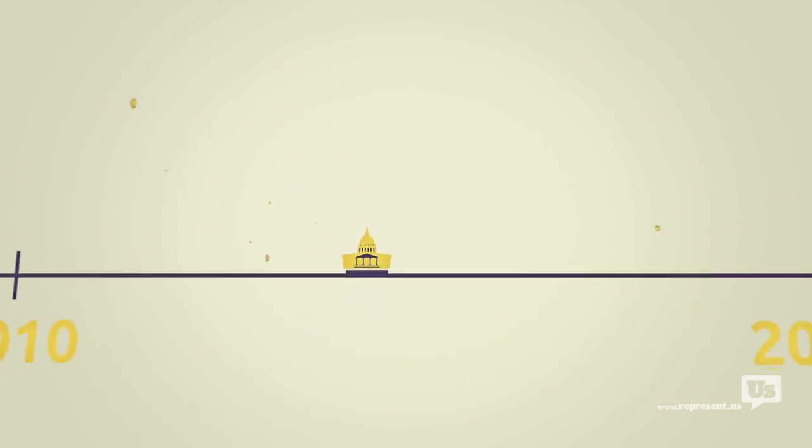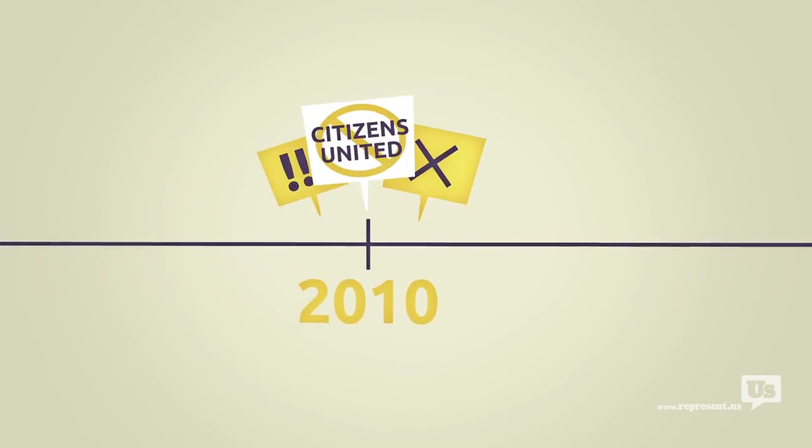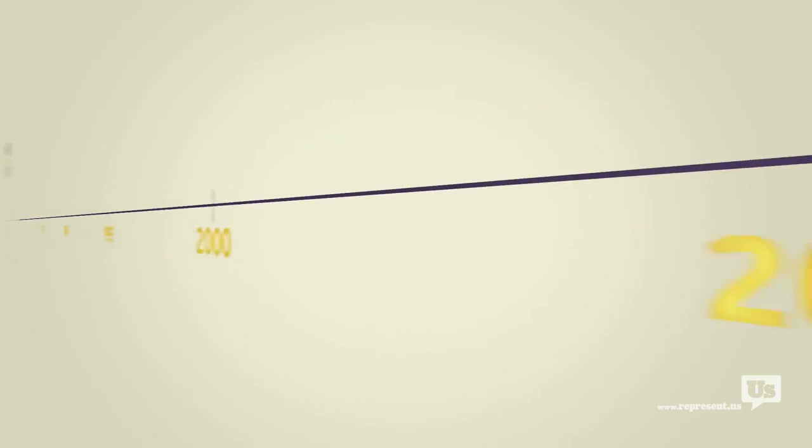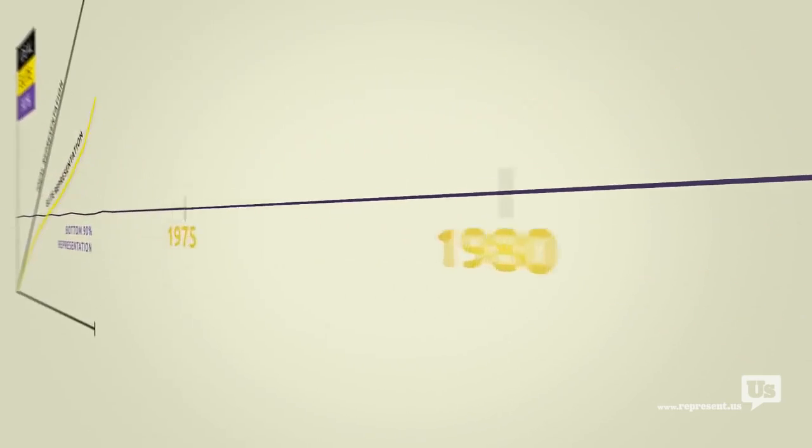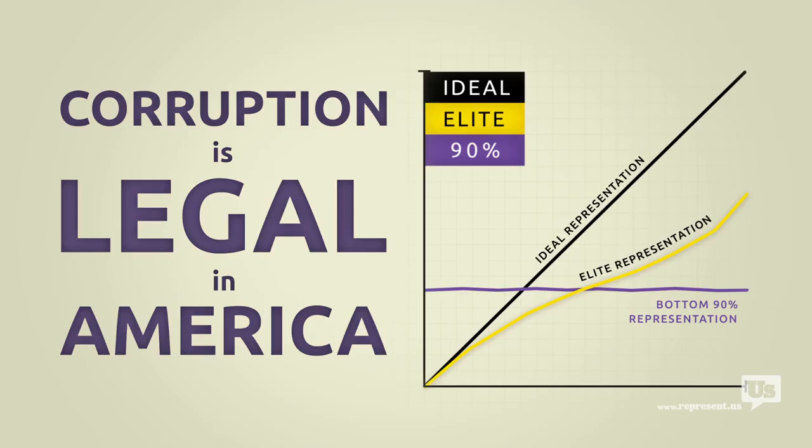You know there's this idea out there that this only became a problem after the Supreme Court Citizens United decision in 2010. But the data goes back almost 40 years and the results are clear. Corruption is legal in America. And as long as it is, anyone who can spend money to buy political influence will.